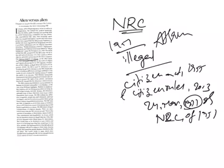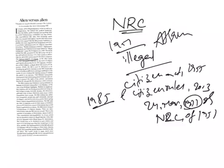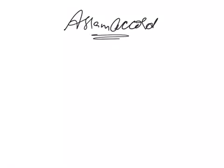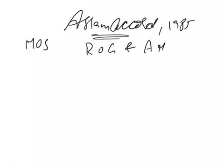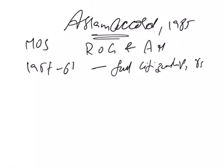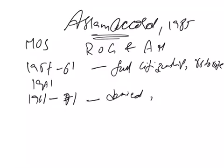The year 1971 is chosen as per the Assam Accord agreed in 1985. The Assam Accord of 1985 was a memorandum of settlement signed between representatives of the Government of India and leaders of the Assam movement in New Delhi. Key demands included: all foreigners who entered Assam between 1951 and 1961 should be given full citizenship including the right to vote, whereas those who entered after 1971 should be deported. Those who entered between 1961 and 1971 would be denied voting rights but enjoy all other rights of citizenship.